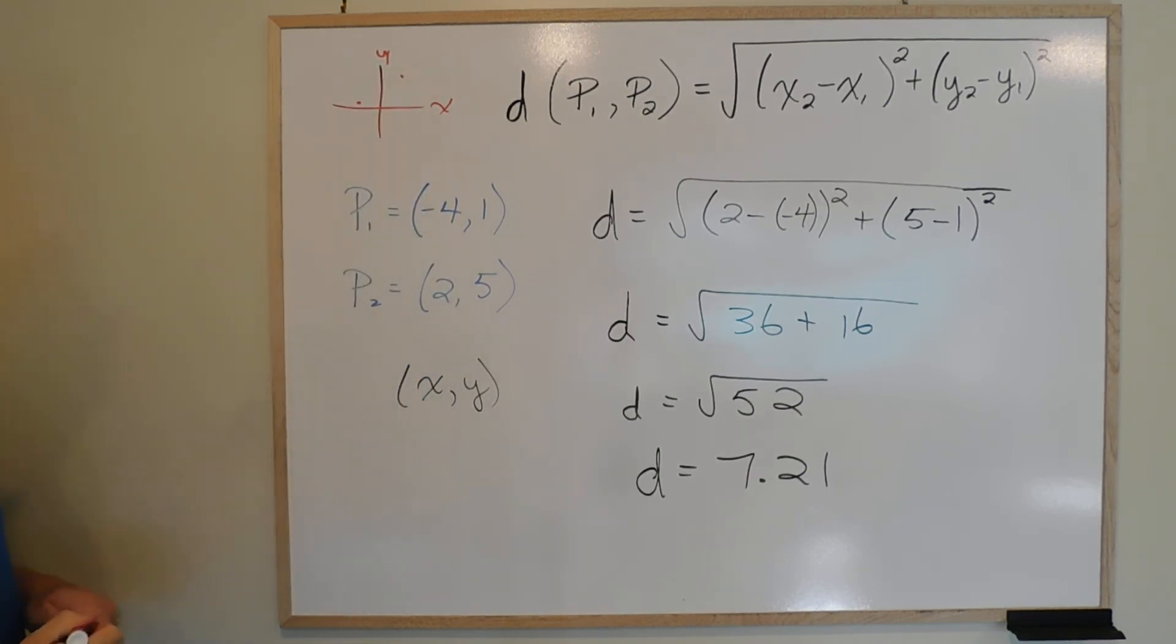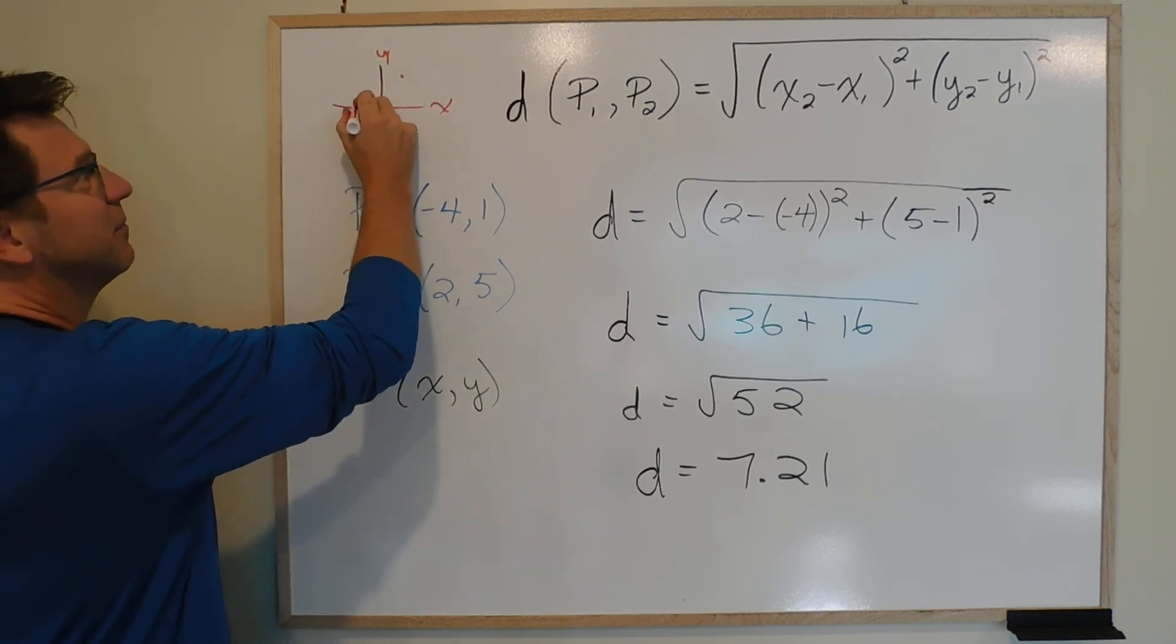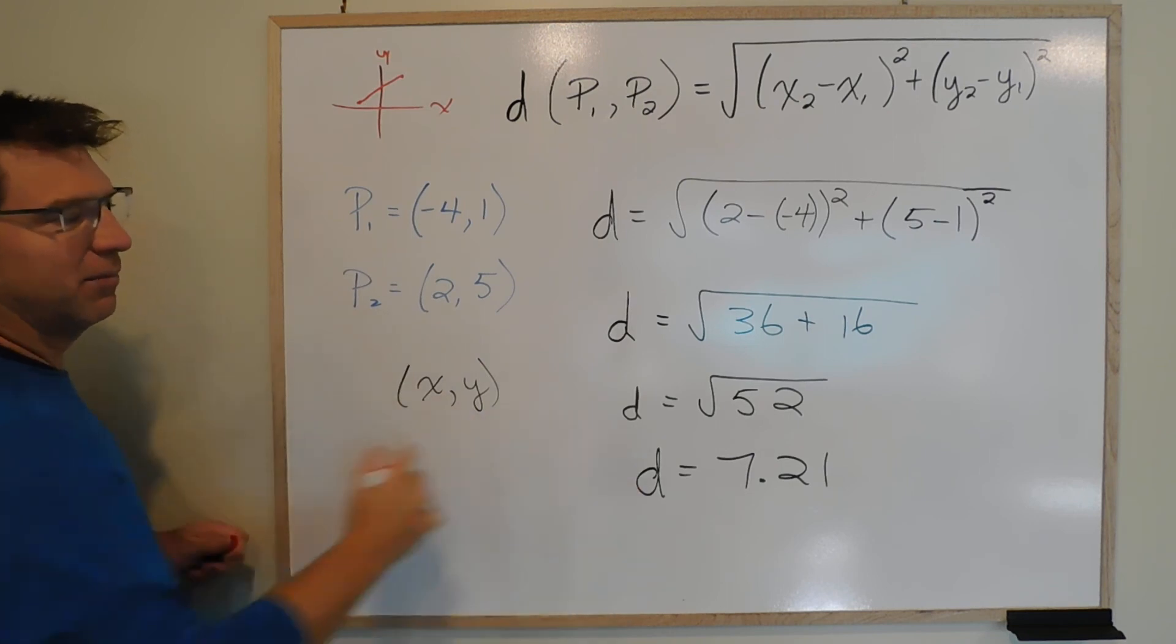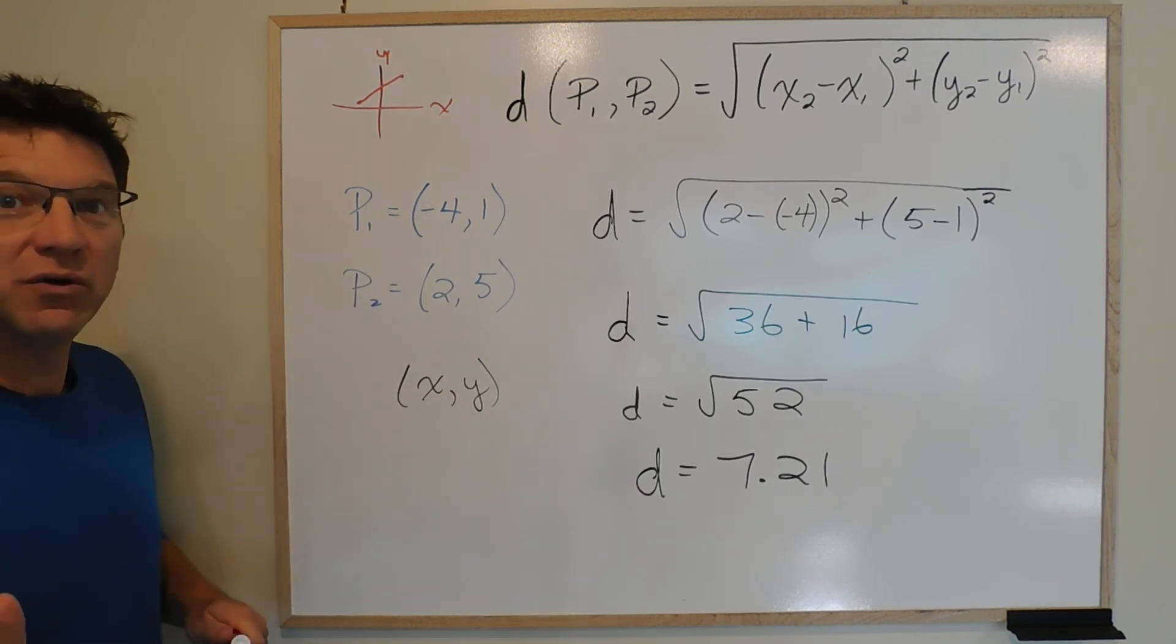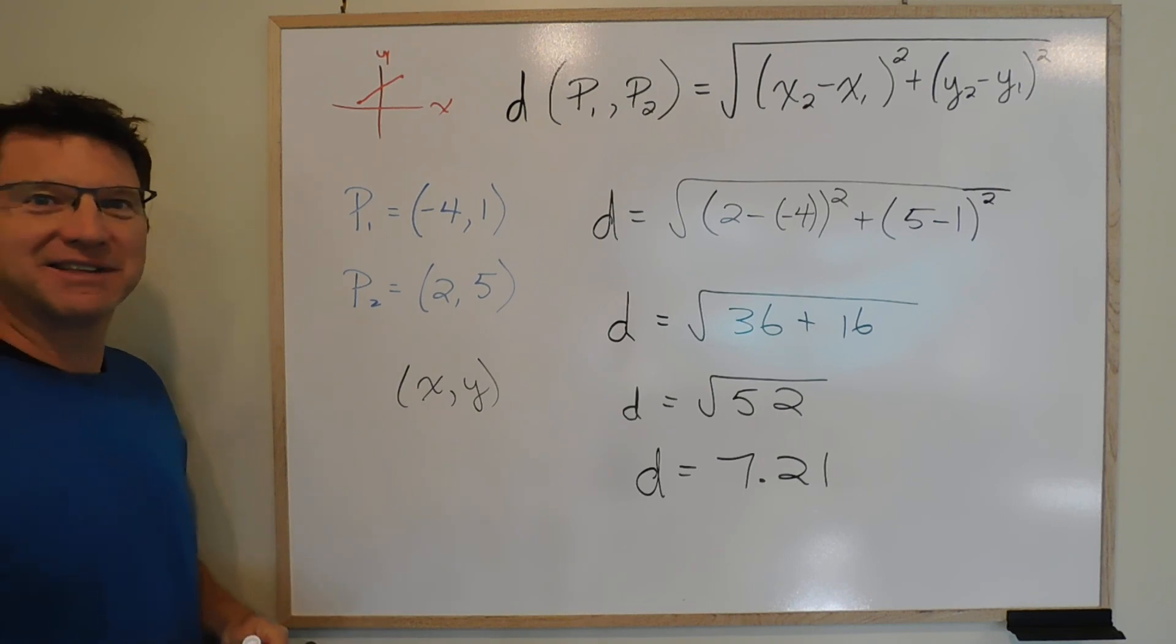Yep, there's a good distance there. And if we needed to find that exact distance from here to here, it would be 7.21 units, okay? Because we don't know if we're working in centimeters or meters or grid pattern. But we know it would be 7.21 something, whatever the units is.